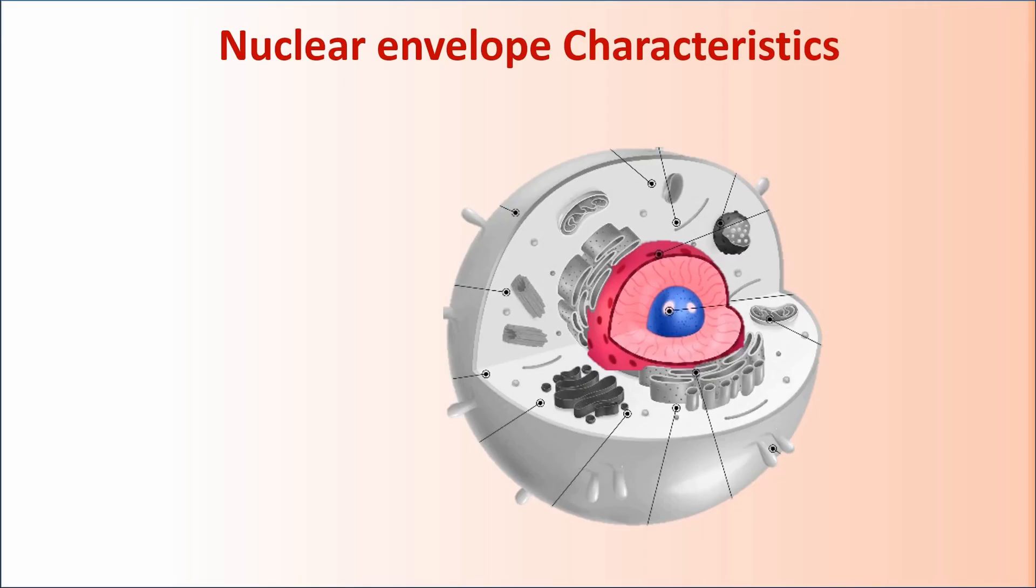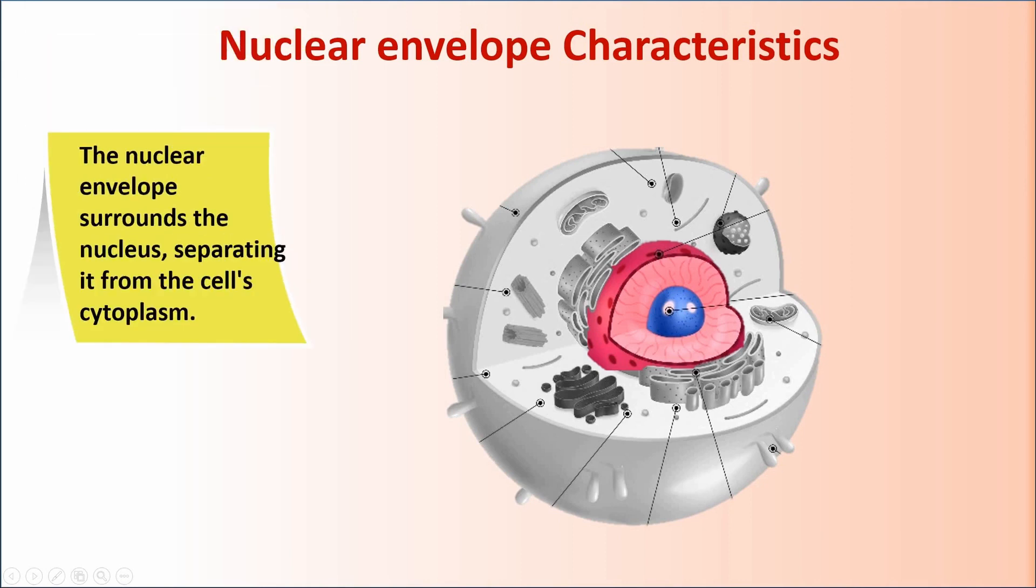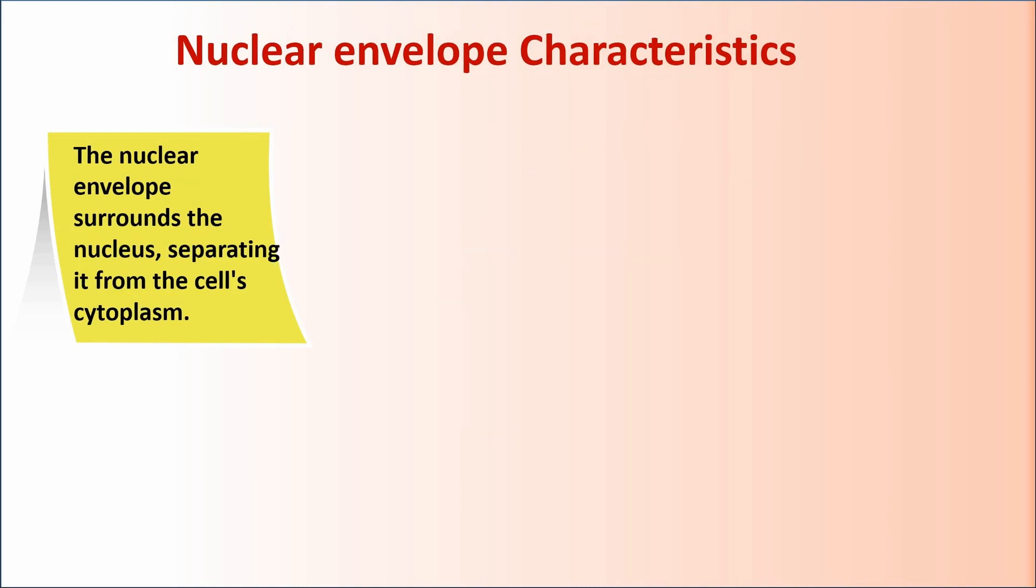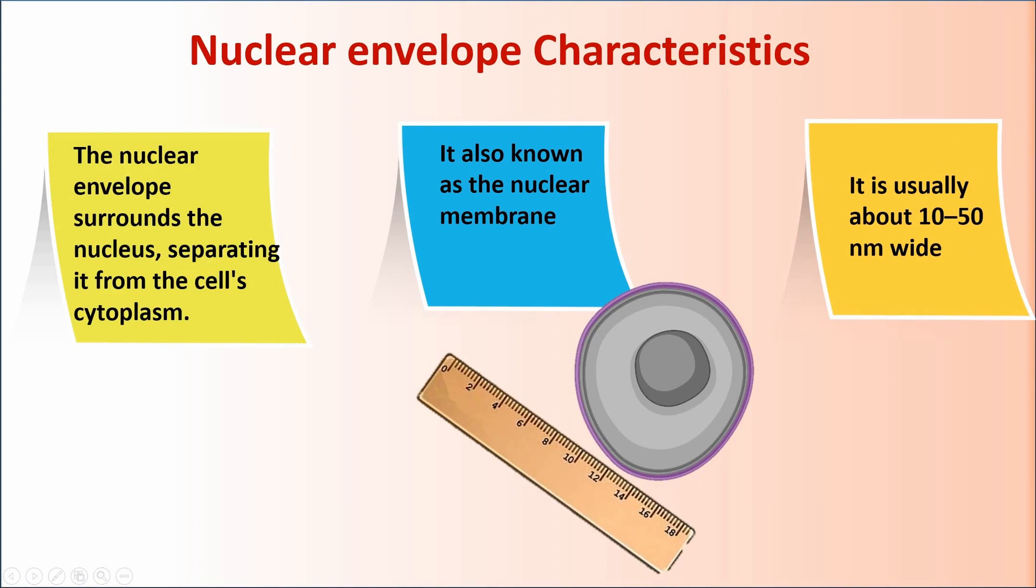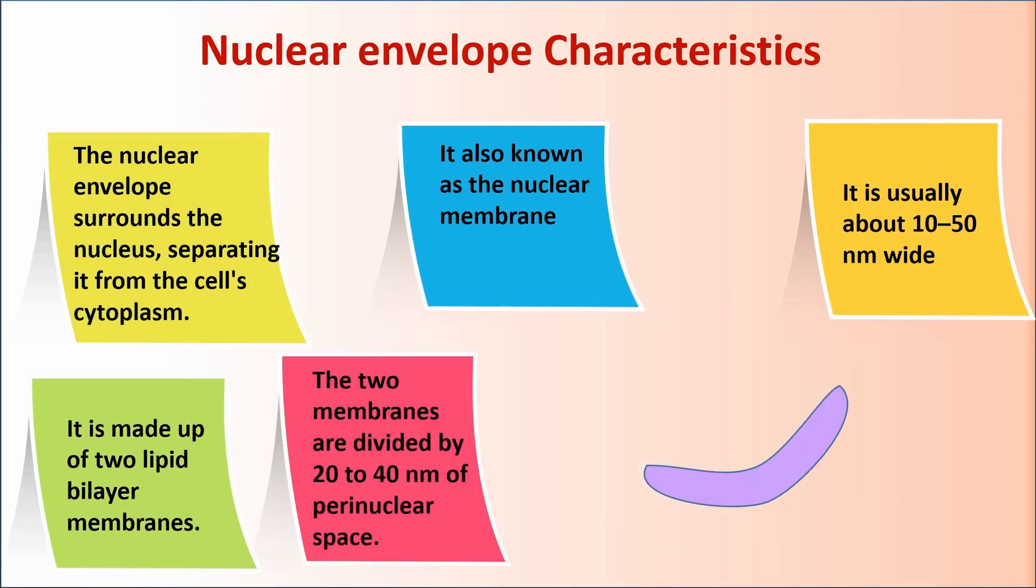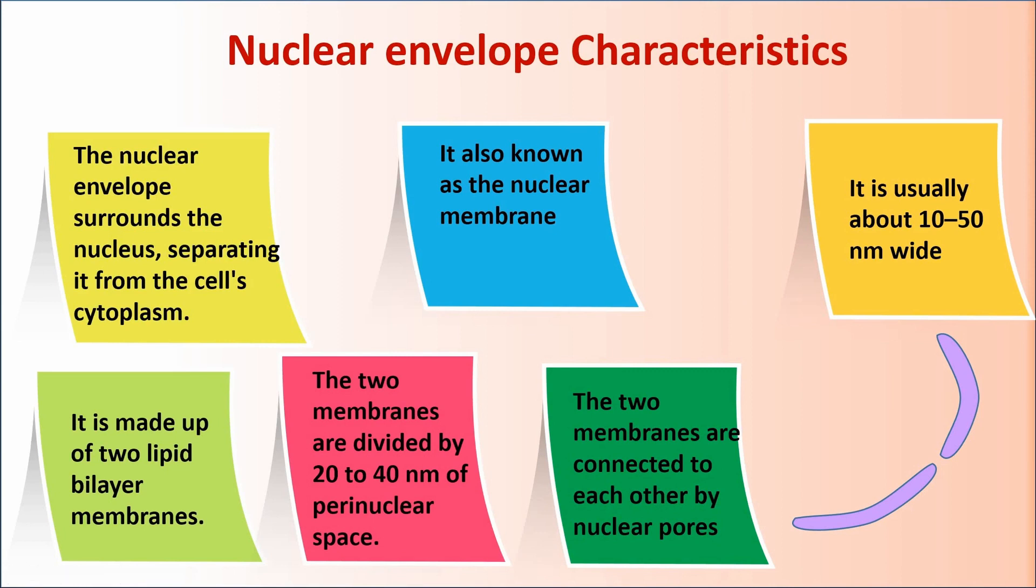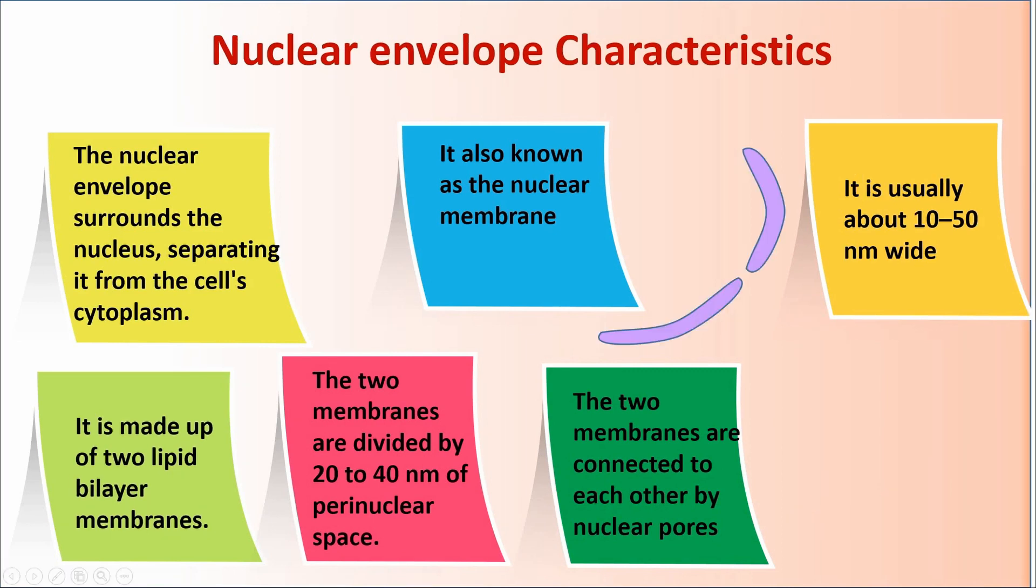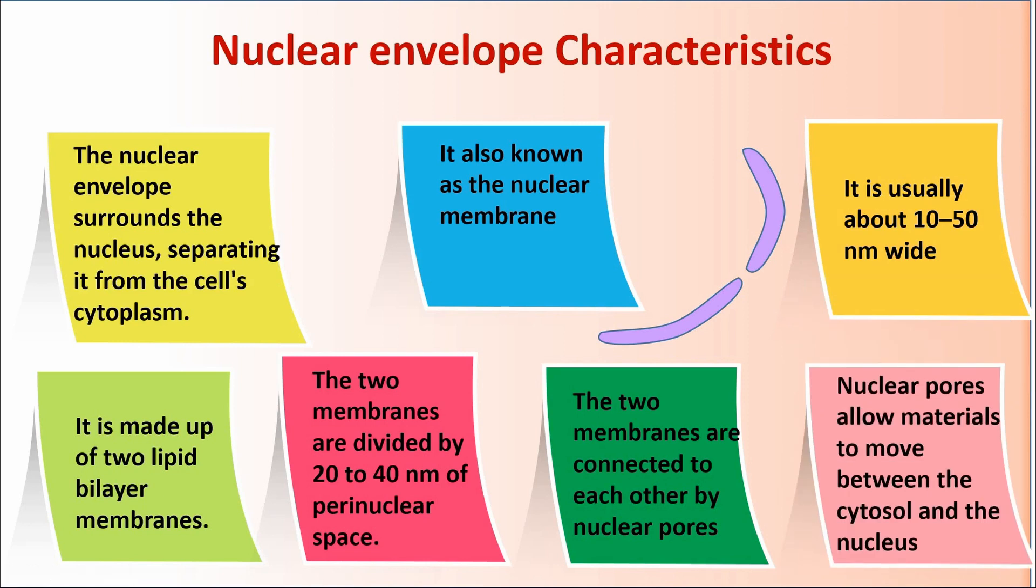Nuclear envelope characteristics. The nuclear envelope surrounds the nucleus, separating it from the cell's cytoplasm. It's also known as the nuclear membrane. It is usually about 10 to 50 nm wide. It is made up of two lipid bilayer membranes. The two membranes are divided by 20 to 40 nm of perinuclear space. The two membranes are connected to each other by nuclear pores. Nuclear pores allow material to move between the cytosol and the nucleus.